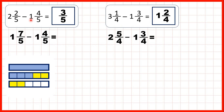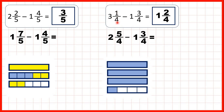And we were subtracting one whole, so that left us with just 3 fifths. Next we had 3 and a quarter — so 3 wholes and 1 quarter. But when we looked at what we were subtracting, we saw that we needed to subtract 3 quarters. So we had to exchange one of our wholes for 4 more quarters. That gave us 2 wholes and 5 quarters. So then we could take away 3 quarters and then subtract the 1 whole, to give us what's left in blue, which is 1 whole and 2 quarters.